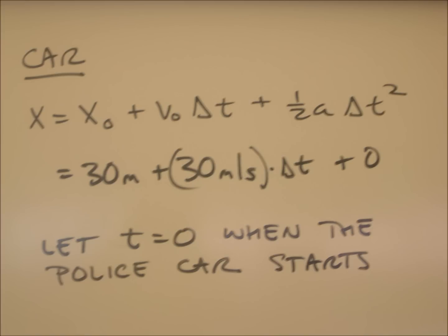I showed the consequences of that change here. Now, instead of the initial position being zero, the initial position is 30 meters to reflect the fact that when the cop starts to accelerate, the car is already 30 meters ahead. So I have an expression x equals 30 meters plus 30 meters per second times t. Since the car never accelerates, its acceleration is zero, and so that third term drops out.